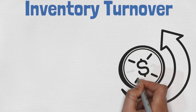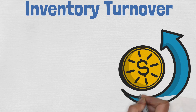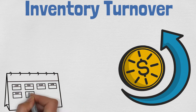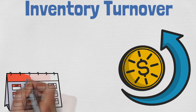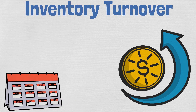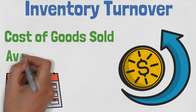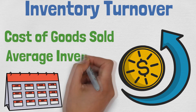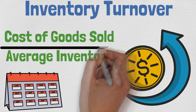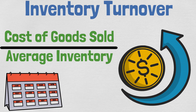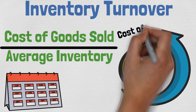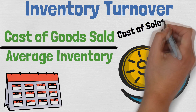The inventory turnover ratio tells us how many times a company is able to sell and replace its inventory during a specific period. It is calculated by dividing the cost of goods sold by the average inventory. The cost of goods sold is sometimes also referred to as the cost of sales.